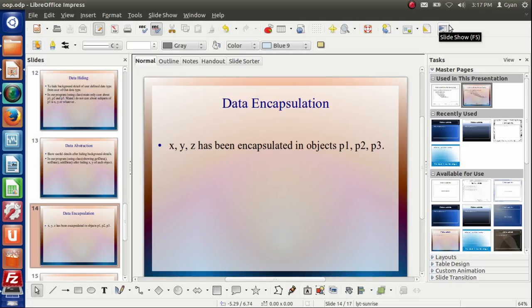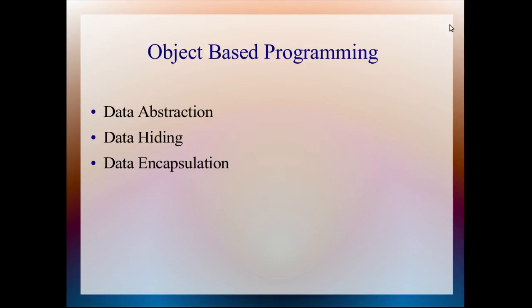Next thing is object-based programming. The programming which satisfies these three object-oriented features - data abstraction, data hiding, and data encapsulation - is called object-based programming. You can say object-based programming is a subset of object-oriented programming and these three features can be implemented through class only.